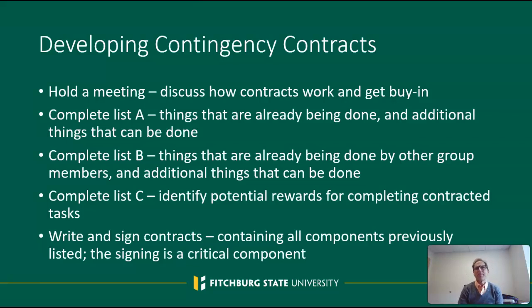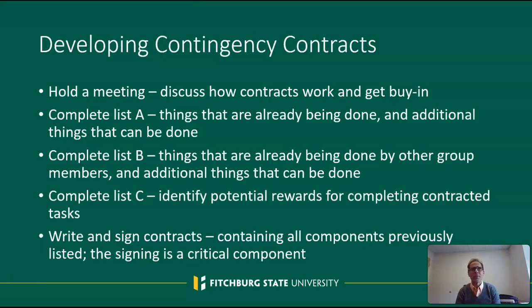Cooper outlined several steps involved in developing contingency contracts. Typically it starts with holding a meeting that includes all of the interested stakeholders, including the person whose behavior is being targeted for change. In that meeting there can be a discussion of how contracts work, as well as getting buy-in from the person being targeted for behavior change and any other stakeholders about what's going to be taking place.